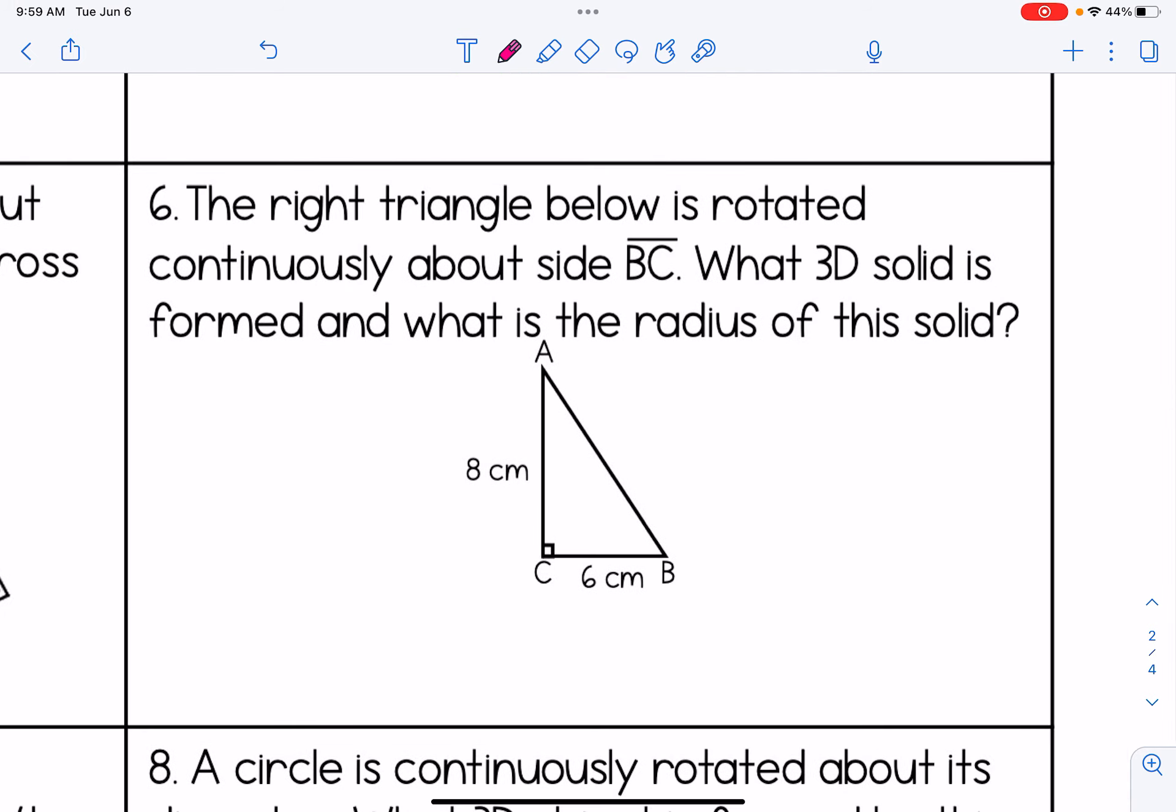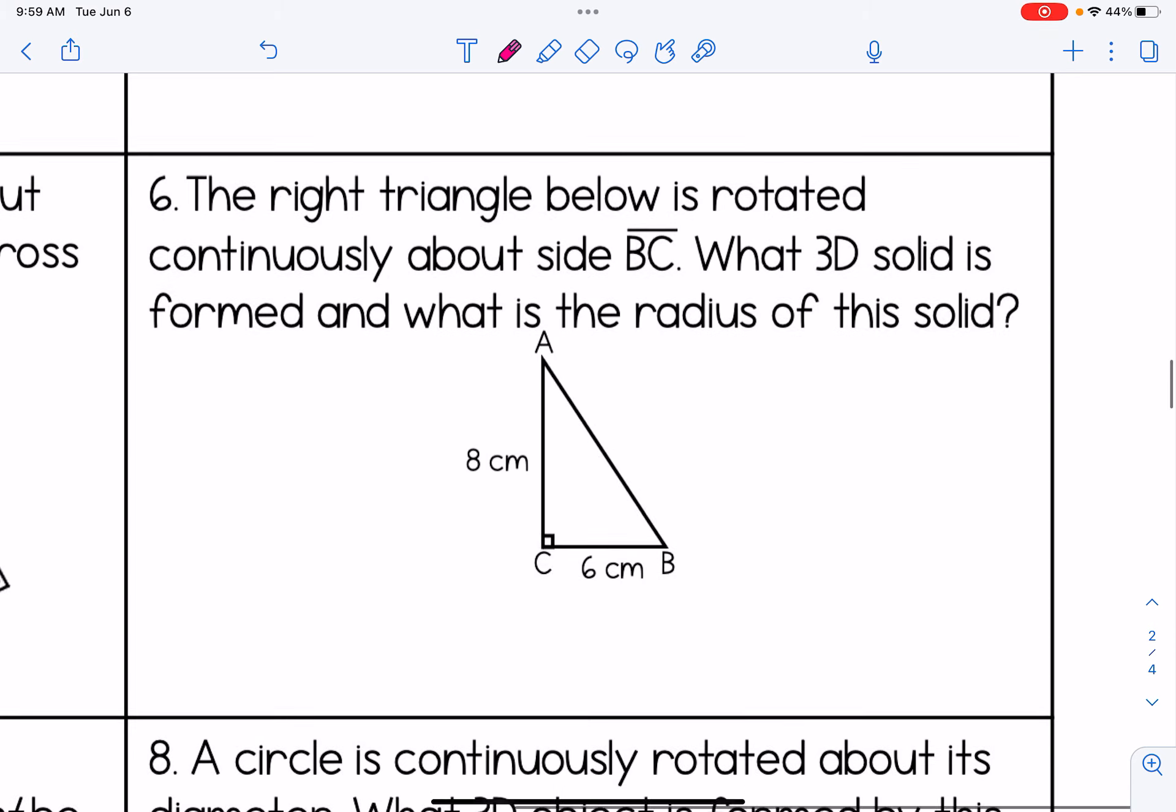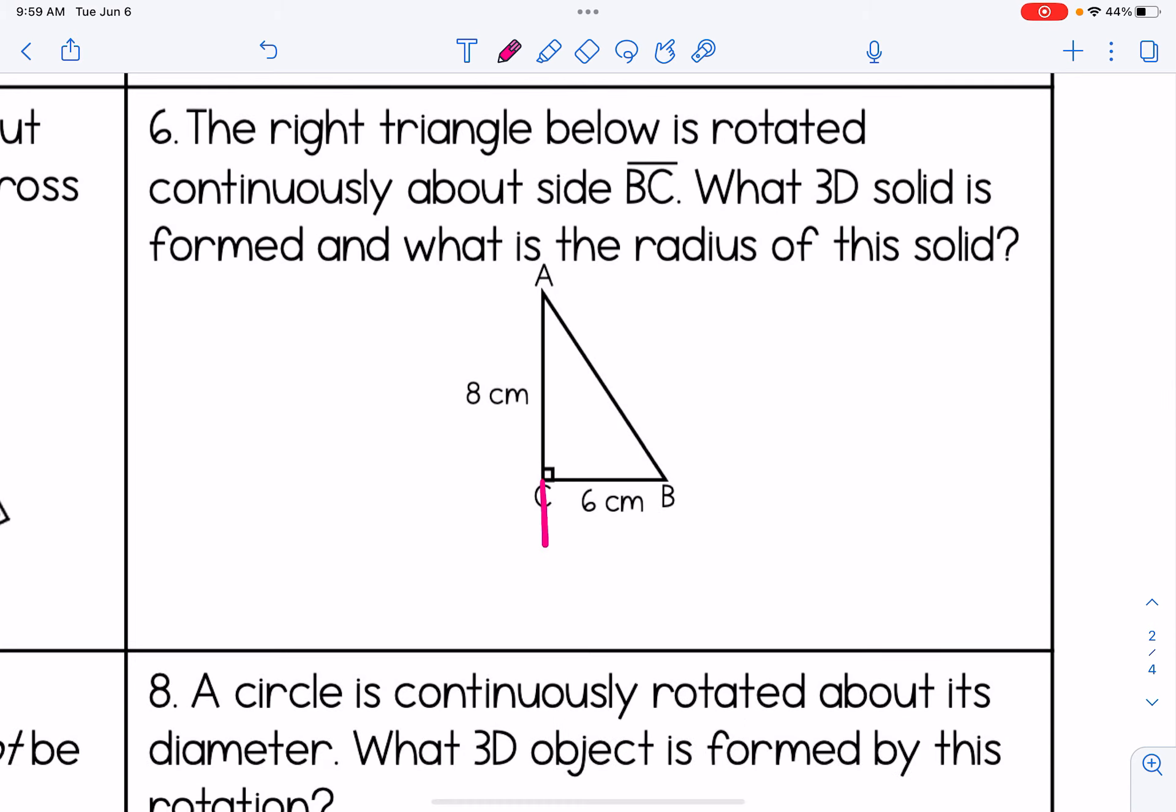Number six, the right triangle below is rotated continuously about side BC. What 3D solid is formed and what is the radius of this solid? So we're going to reflect over BC and we're going to curve the side that is perpendicular to that line of reflection, which is really, again, that's like our code for our axis of revolution.